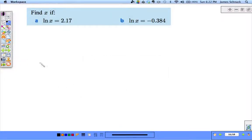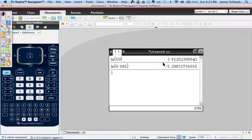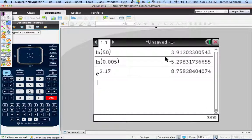But let's jump to the next page. Find x if natural log of x equals 2.17. What's the base? The base is e. Logs are equal to exponents, so e^2.17 is equal to x. Let's jump to our calculator. e^2.17 is equal to... there's my answer. There's x.